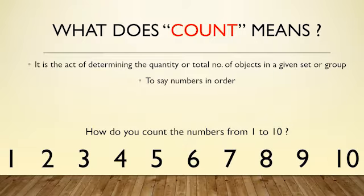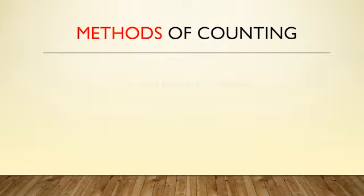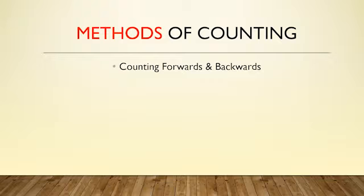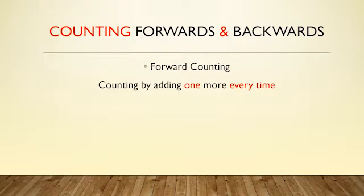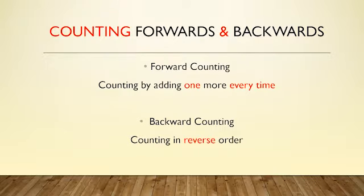There are two methods of counting. First is counting forward and backward, and the second is counting in groups. So let's see one by one. Forward counting is counting by adding one more every time, and backward counting is counting in reverse order.